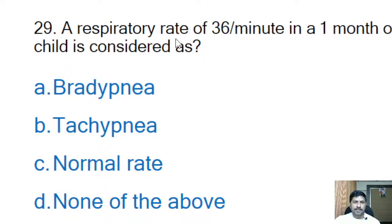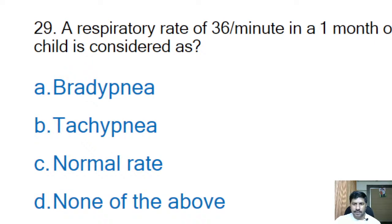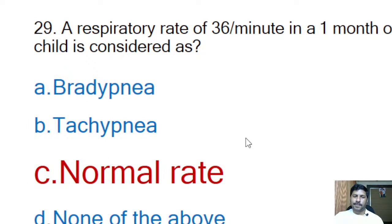Twenty-ninth question: a respiratory rate of 36 per minute in a one-month-old child is considered as — bradypnea, tachypnea, normal rate, or none of the above? Correct answer is option C — normal rate. A respiratory rate of 36 per minute is normal for a one-month-old child.